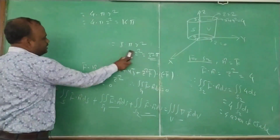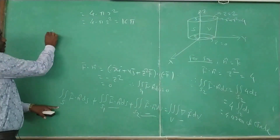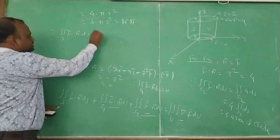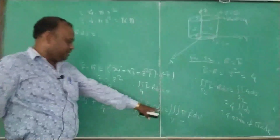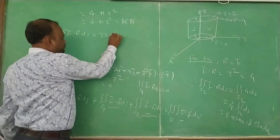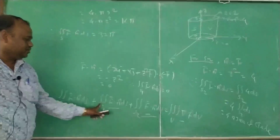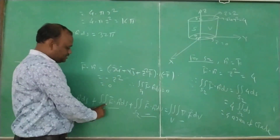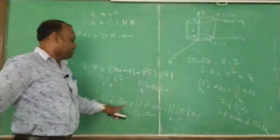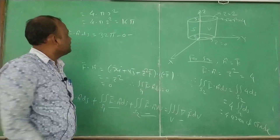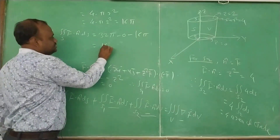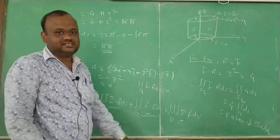Therefore, the curved surface integral equals the volume integral minus the S1 integral minus the S2 integral: 32π − 0 − 16π = 16π. So the final answer is 16π. Thank you.